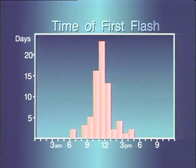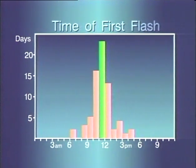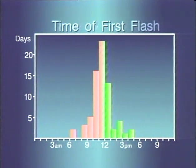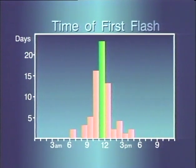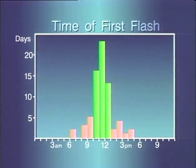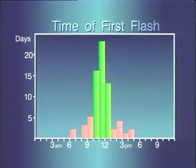The striking feature of this distribution is its symmetry around the central bar representing the time between 11 a.m. and noon. Of course, the two sides are not exact mirror images, but that's to be expected with real data. Another striking aspect of the histogram is how tightly the data cluster around the central bar. The range from 10 a.m. to 1 p.m. accounts for most of the observations.